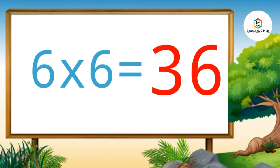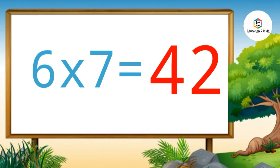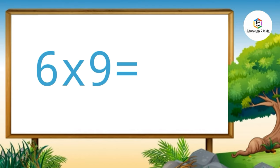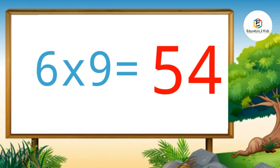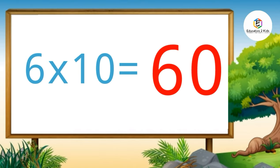Six sevens are forty-two. Six eights are forty-eight. Six nines are fifty-four. Six tens are sixty.